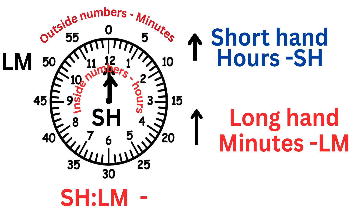We read the clock as SH, LM. Here, the short hand is at 12, so the SH — that is, the hour — is 12. See the inner number. And the long hand is at 12, so the LM — that is, the minutes — is zero. See the outer number. The time is just 12 o'clock.